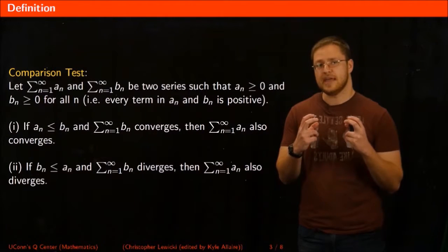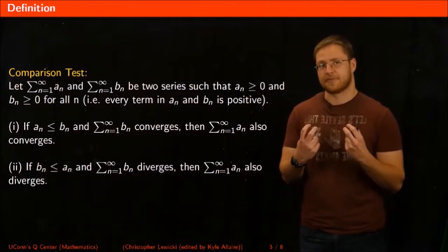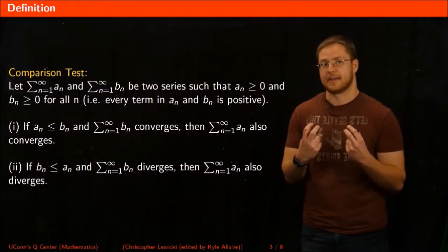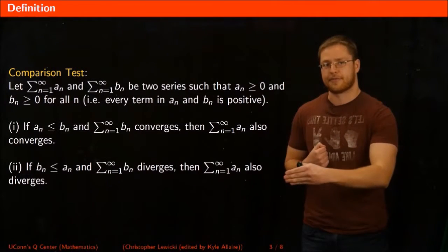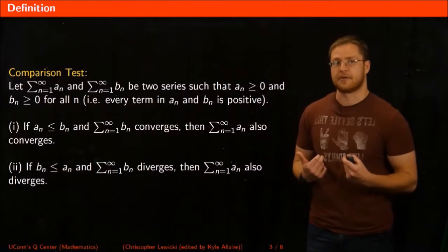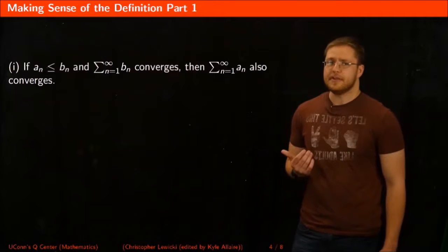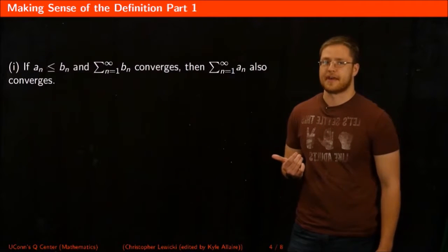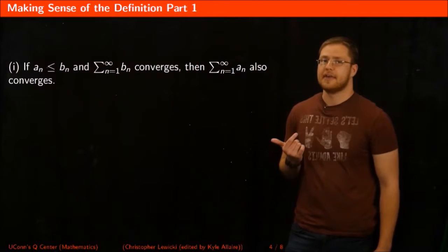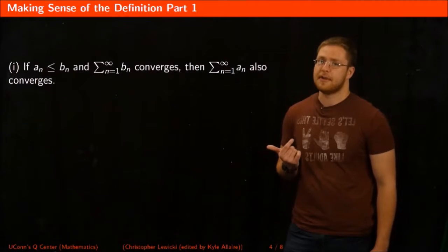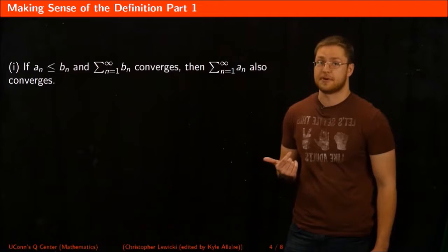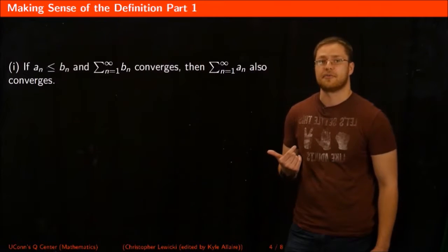What the comparison test basically says is: if you have two infinite series where all of the terms in both series are positive, and you're able to compare the two series one of two ways, then you're able to use the comparison test to conclude convergence or divergence. The first case says if the terms in An are always less than or equal to the terms in Bn, and we know that the series Bn converges, then the series An also has to converge.